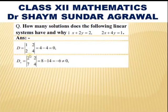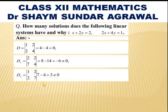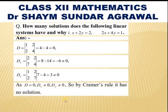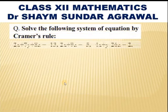Dx is found by replacing the coefficients of x with the constant terms 2 and 1, giving |2 2 / 1 4| = 8 − 2 = ... actually |2 2 / 1 4| = 8 − 2 = 6... the result is −6, which is not equal to 0. Similarly, Dy = |1 2 / 2 1| = 7 − 4 = 3, not equal to 0. Here D = 0, Dx is non-zero, and Dy is non-zero, so it has no solution.